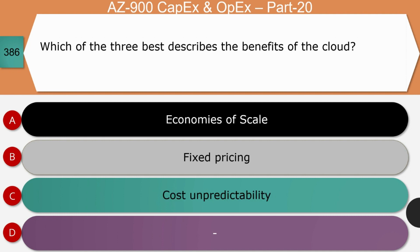Next question: Which of the three best describes the benefits of the cloud — economies of scale, fixed pricing, or cost and predictability? The right answer is economies of scale. Fixed pricing is not a principle of cloud computing; in cloud you can always predict cost using various tools. Economies of scale is the concept of reducing cost and gaining efficiency when operating at a larger scale compared to a smaller scale.